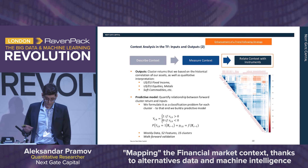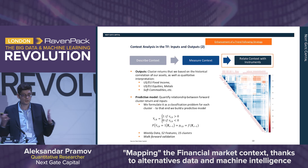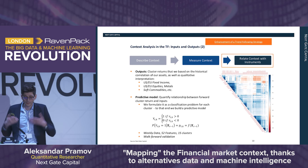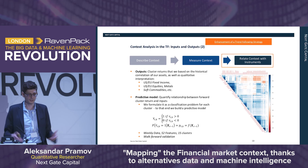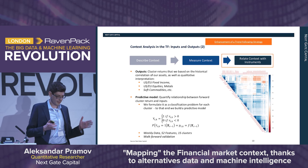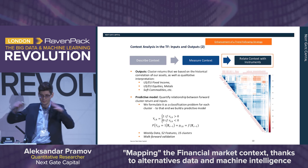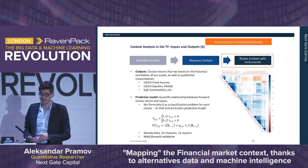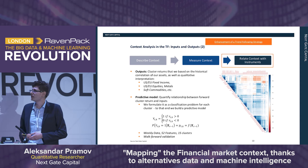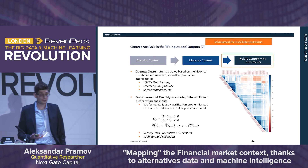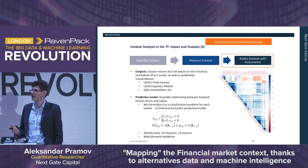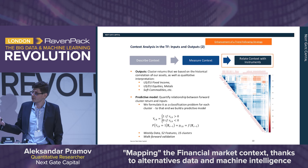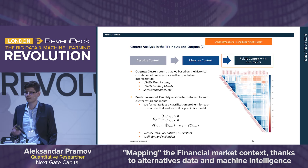We thought of two approaches: building models for each individual asset, or — the one we prefer — because we see the context as a top-down overlay on our systematic investment strategy, doing it by clusters of instruments. One simple way to cluster them is by looking at historical correlation and semi-qualitatively interpreting the results. We end up with subclasses of asset classes such as US fixed income, US equities, metals, and so on.